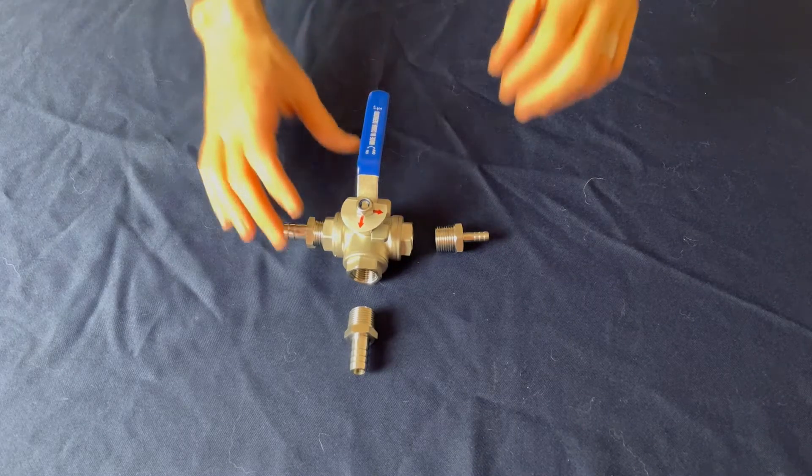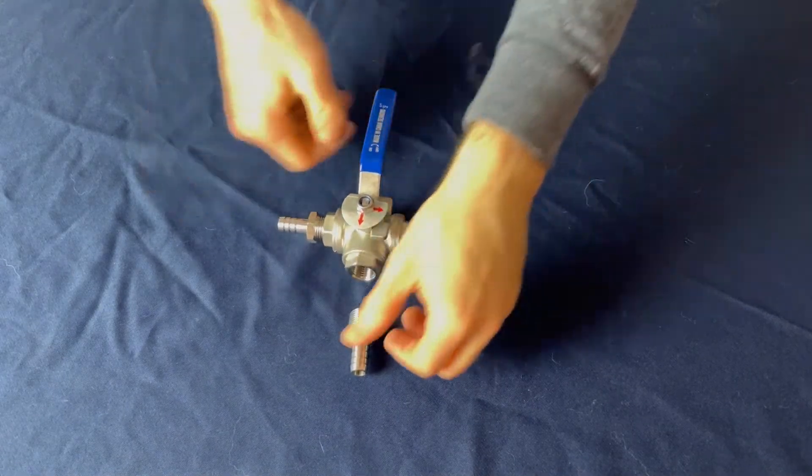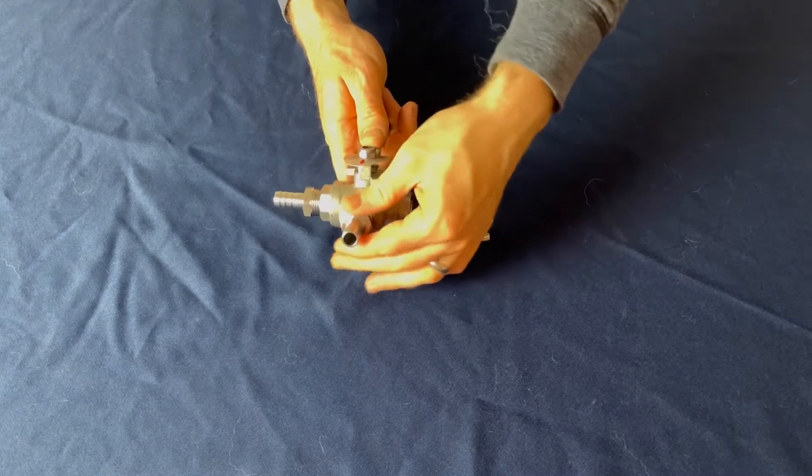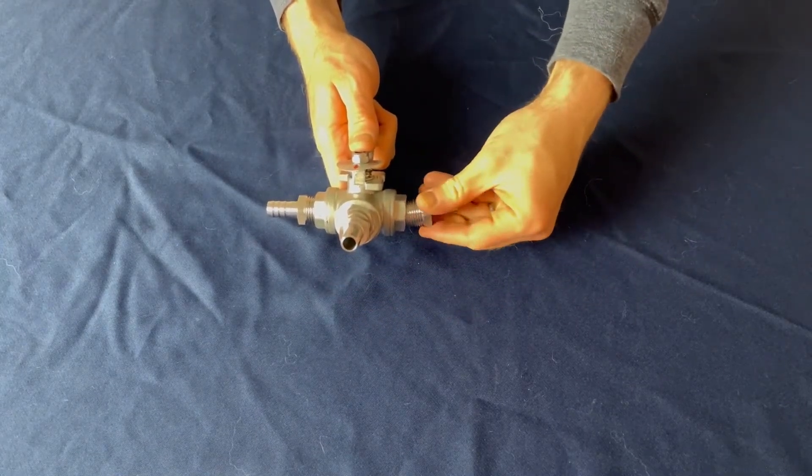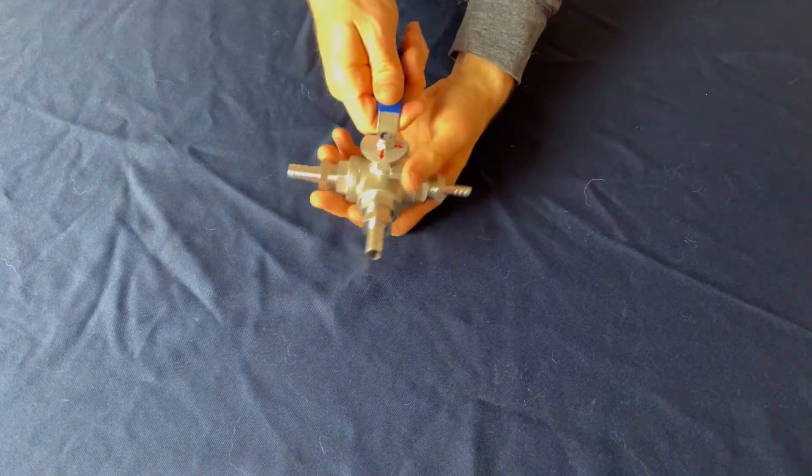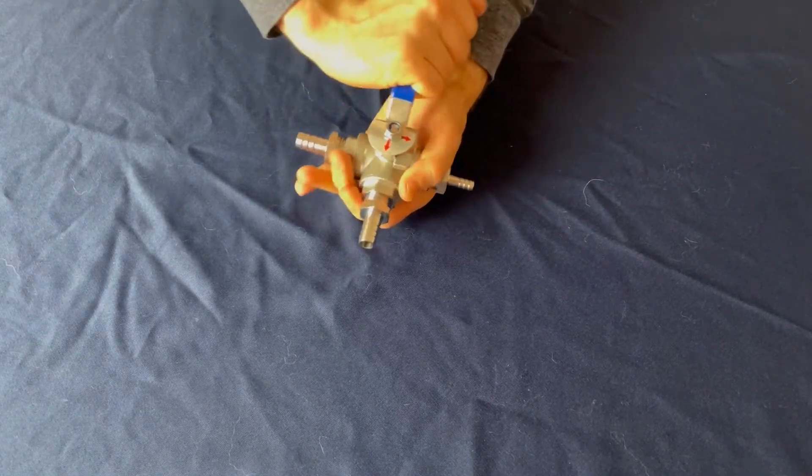For this we have a T-valve. One of the half-inch barbs is already installed. We'll install the top one, which will go to the top of the fermenter where the blow-off tube was, and the other one, which I have right here, will go to the gas line. The T-valve can turn, so it will go one from the blow-off into the gas line.